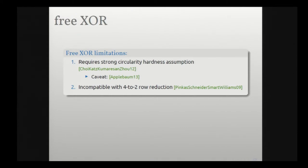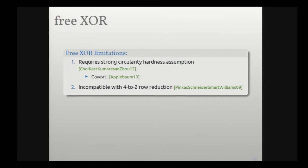Free XOR has been the dominant approach in garbled circuits for a while, but there are a couple of limitations. First, free XOR requires a strong hardness assumption — a circularity assumption — on the encryption function used to generate the garbled gates. There is a construction by Applebaum that avoids this, but its concrete parameters aren't competitive with block cipher or key derivation function-based garbled circuits. The other limitation is that free XOR is incompatible with the row reduction technique that reduces garbled gates from four to two ciphertexts. If you use free XOR, your XOR gates are free, but you can only get other gates down to three ciphertexts, not two.